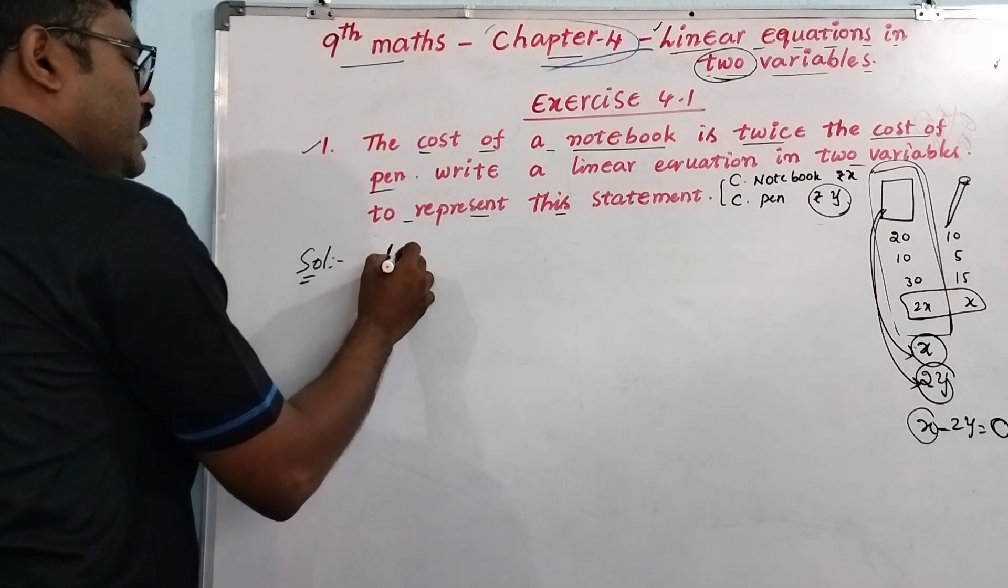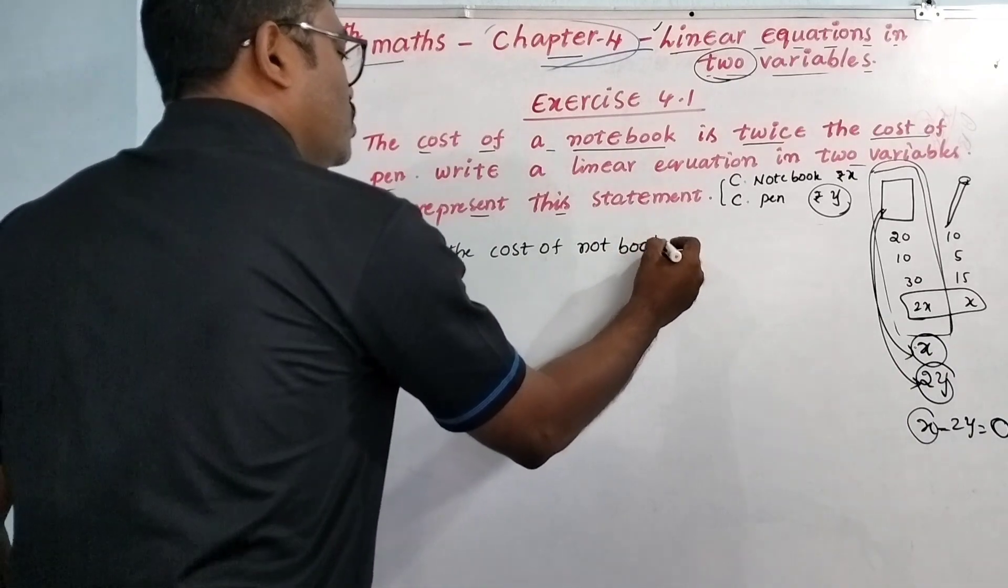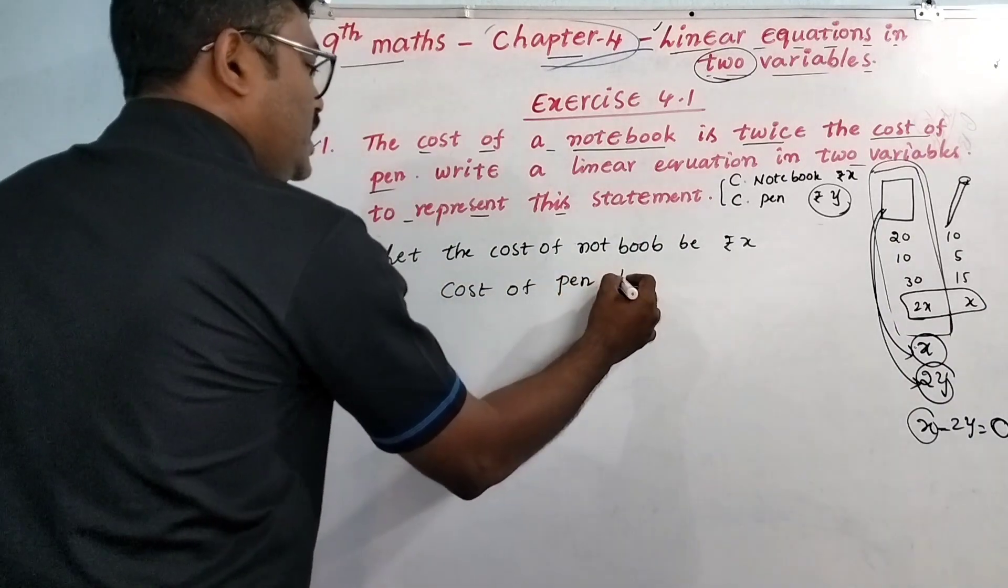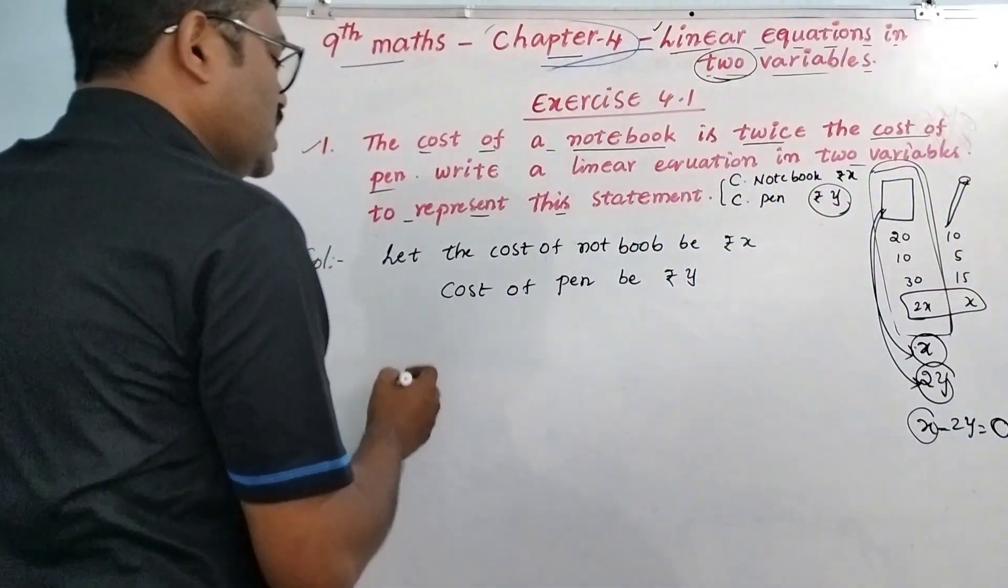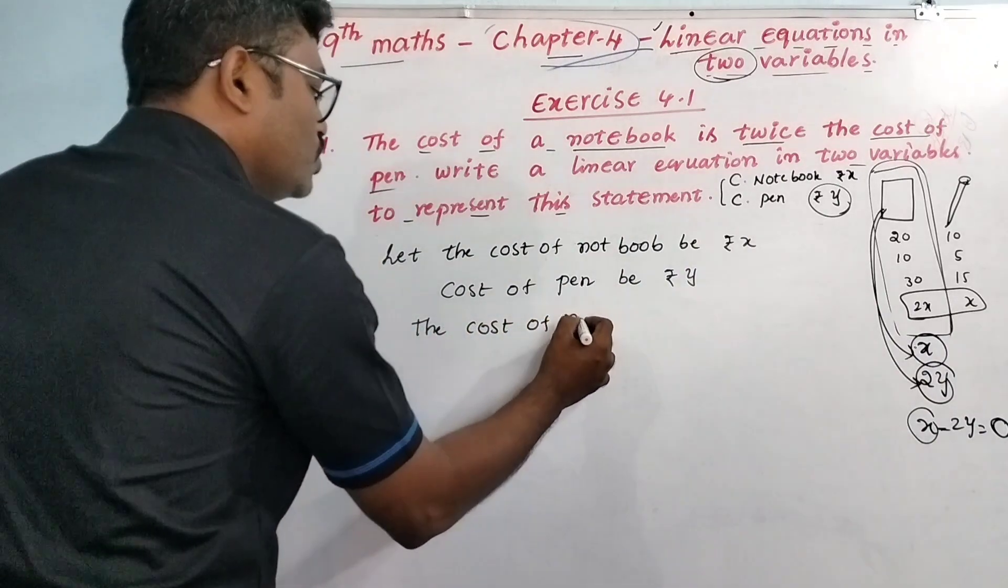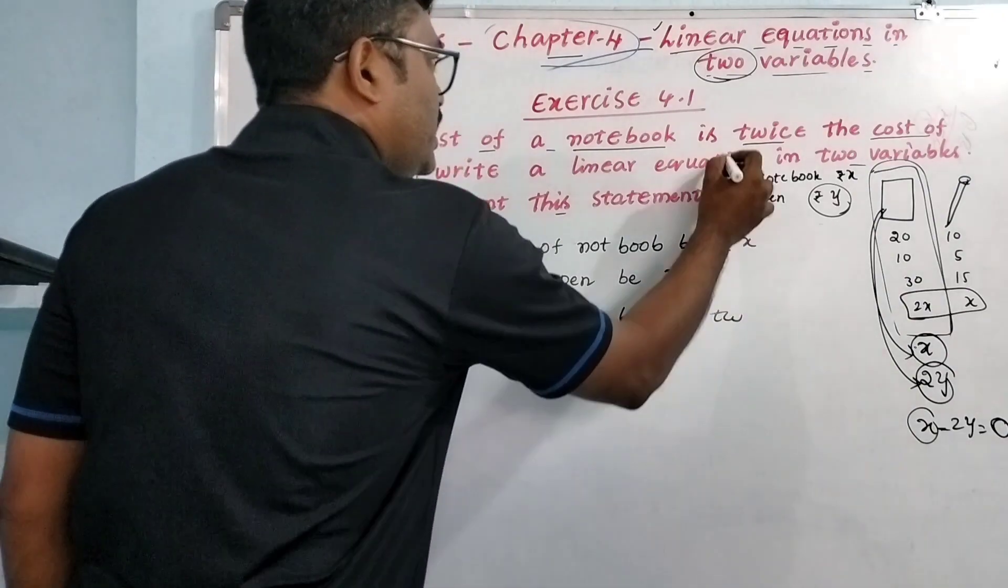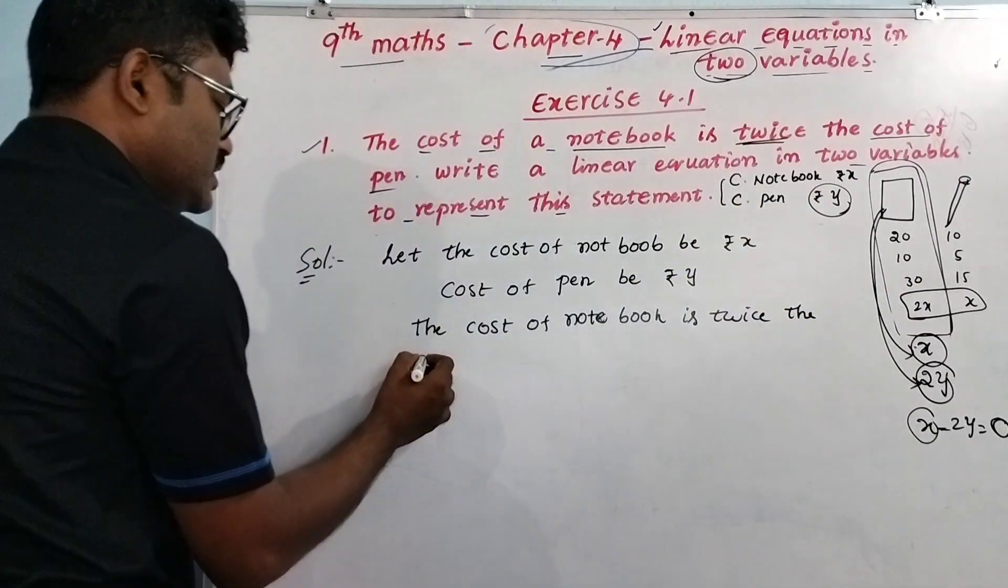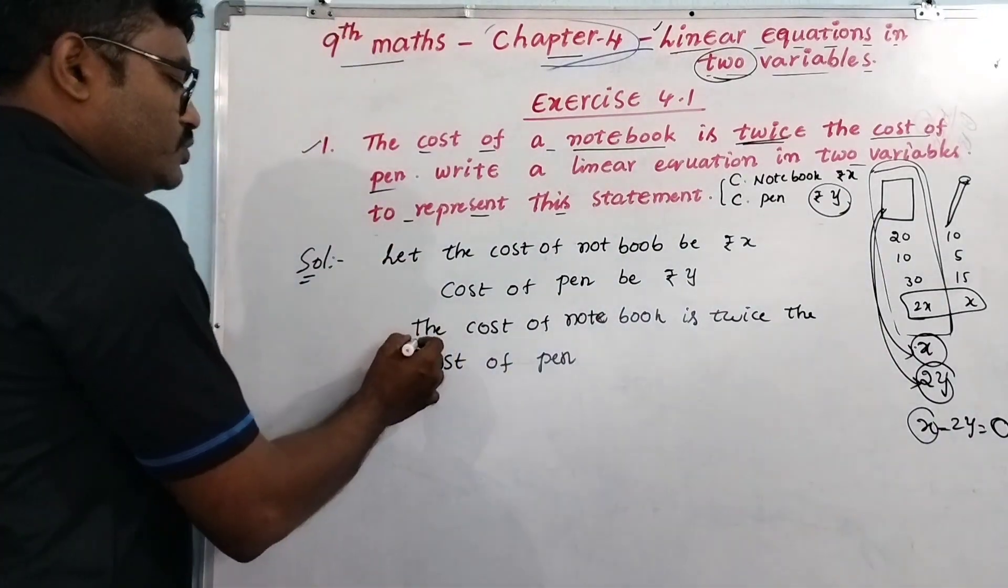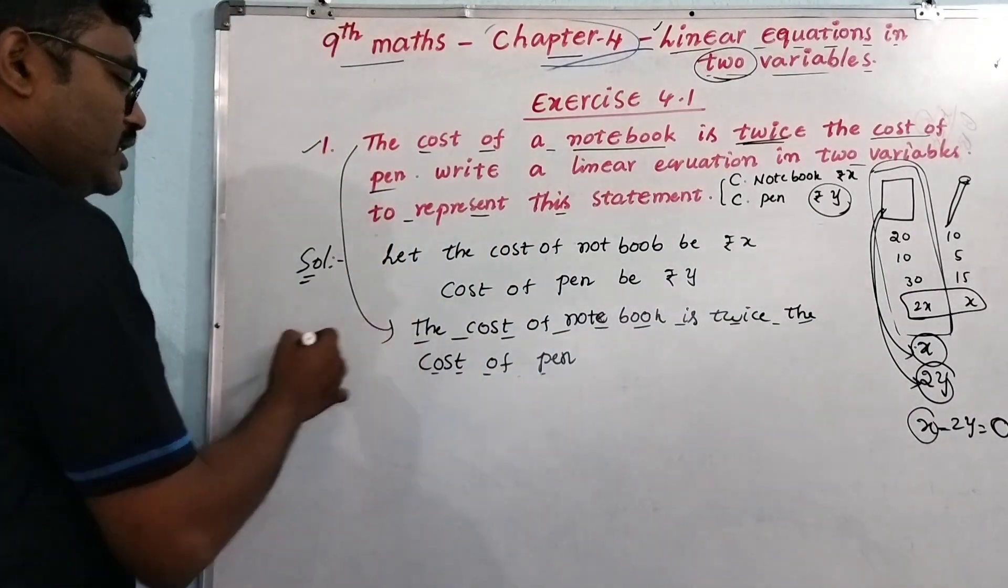Let the cost of notebook be x rupees and the cost of pen be y rupees. Cost of pen is y rupees. Then, the cost of notebook is twice the cost of pen. Each statement says the cost of notebook is twice the cost of pen, as given.